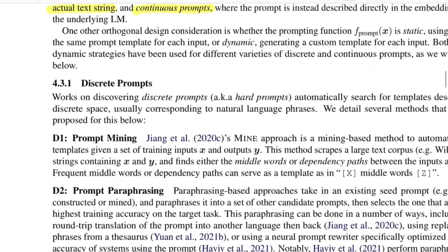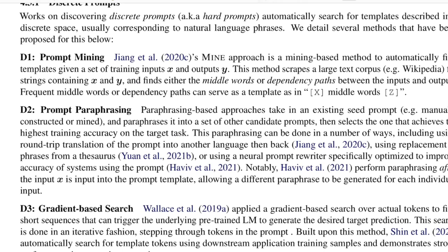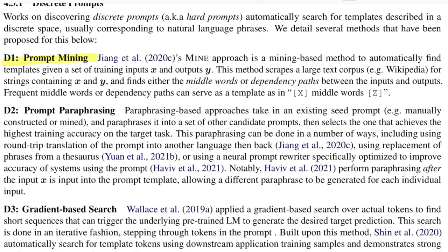Let's look at discrete prompt methods. The first is prompt mining — automatically mining templates from a corpus. Given an input sample X and output label Y, for example sentiment classification with 'I really like this movie' labeled positive, this method searches a large corpus like Wikipedia for strings where X and Y occur together separated by middle words, forming templates. The middle words are then ranked by a score — here frequency is mentioned, but TF-IDF scoring could also be used — to determine how likely that middle word sequence is for the particular task.